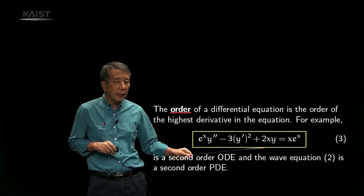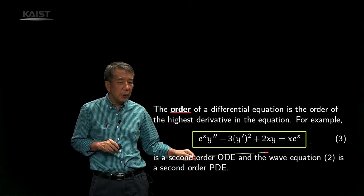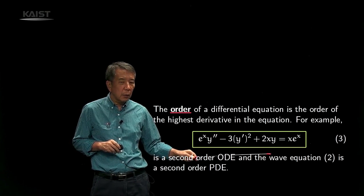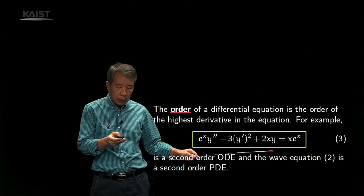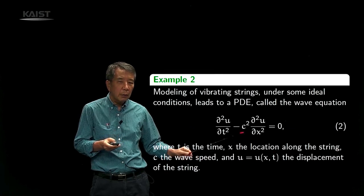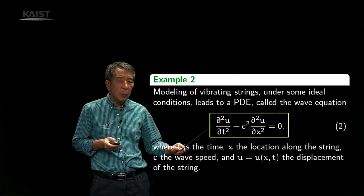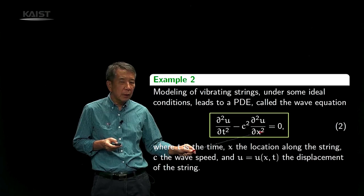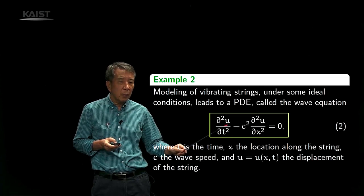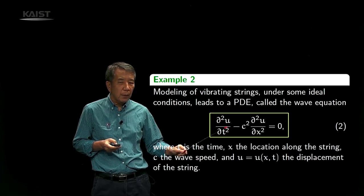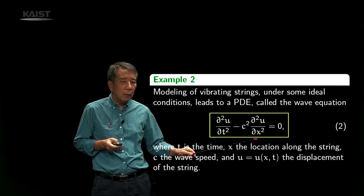On the other hand, the partial differential equation — the so-called wave equation, equation number 2 — is a second order partial differential equation, because the highest order derivative involved is the second derivative of u in either the t variable or the x variable.